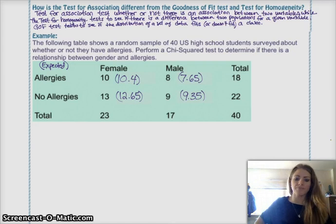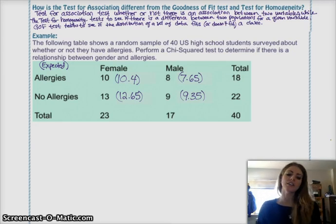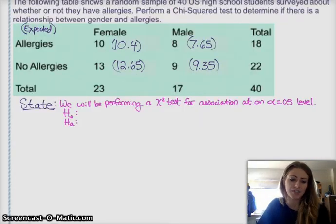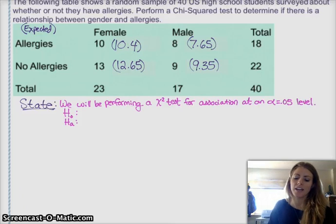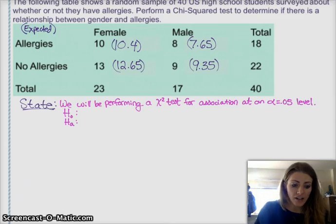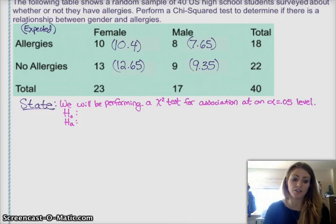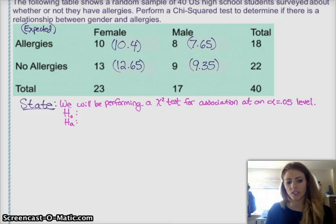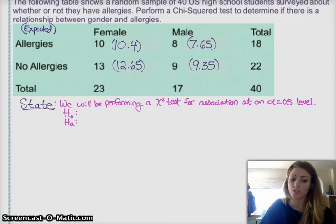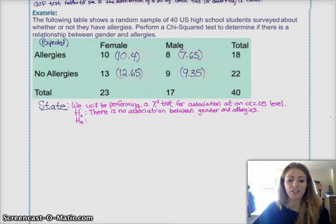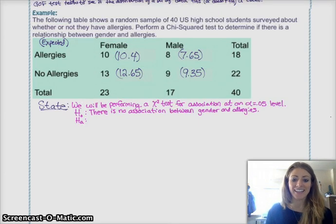So, now we have all of that for later when we need it, and then we can start with our state, plan, do, conclude, four-step process. State what you're going to do. We're going to be performing a chi-squared test for association at an alpha equals 0.05 level, and a significance level of 0.05. And now we need to state our hypotheses. Our null hypothesis is that there is no association between allergies and gender. Our alternative hypothesis is that there is an association between these two things. Or, that they are not independent. Whichever one you choose. Just keep your wording consistent.